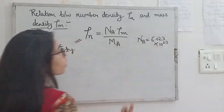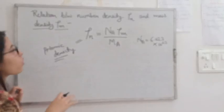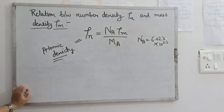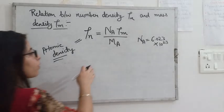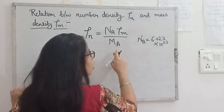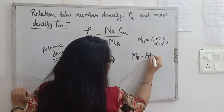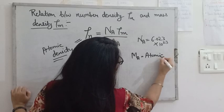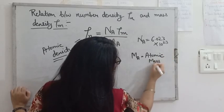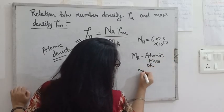Nₐ is Avogadro number. Now ρₘ, what is ρₘ? ρₘ is the mass density, that means the mass of atoms per unit volume. Now if we talk about Mₐ, Mₐ is the atomic mass or the mass of one atom.